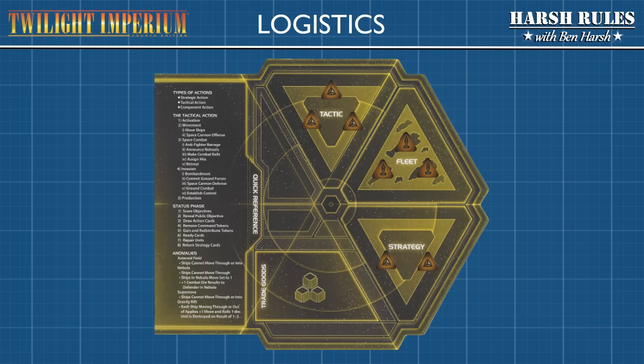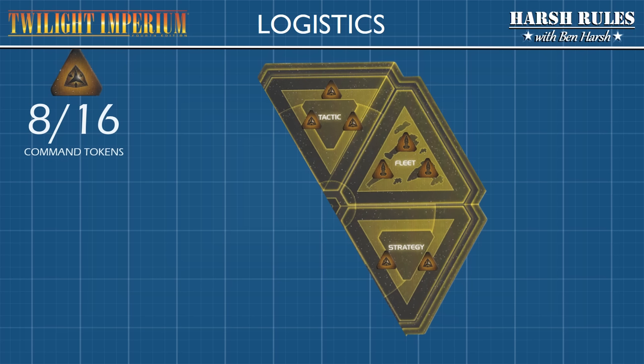Let's discuss the use of Command Tokens. As you may remember from Setup, Command Tokens are always placed on one of three spaces on the Command Sheet. Players begin the game with eight of their total 16 Command Tokens assigned to their Command Sheet: three Command Tokens in the Tactics space, three in the Fleet space, and two in the Strategy space. Let's review each of these spaces to learn how they govern gameplay.